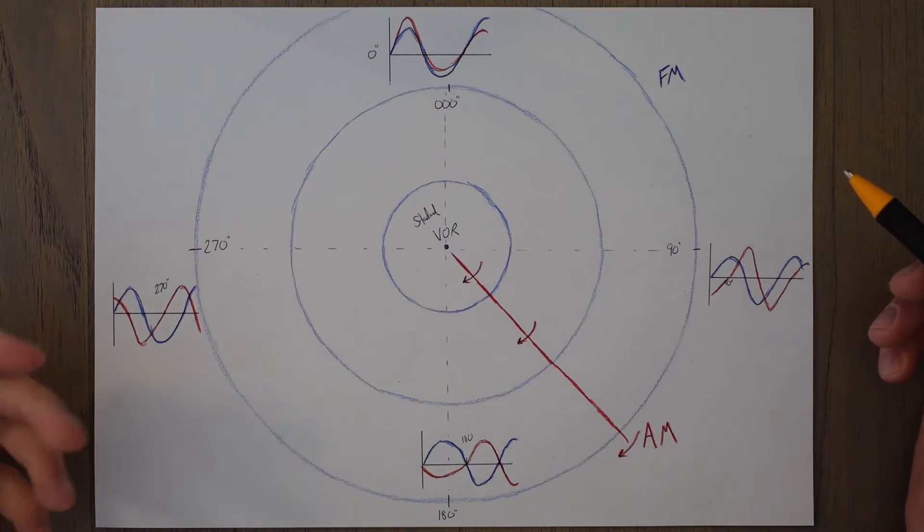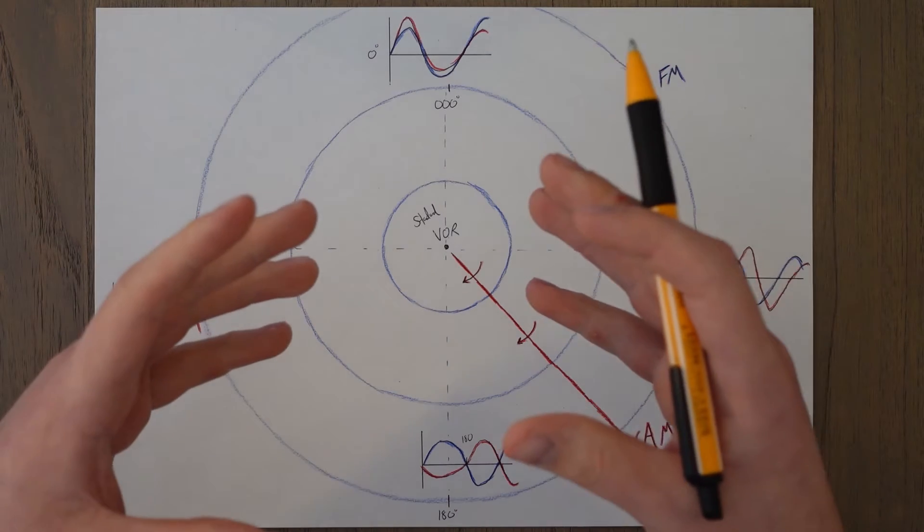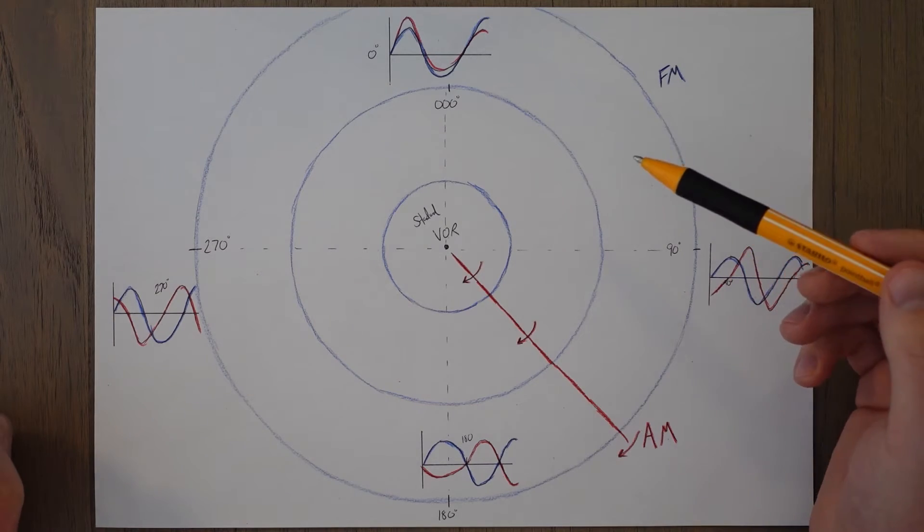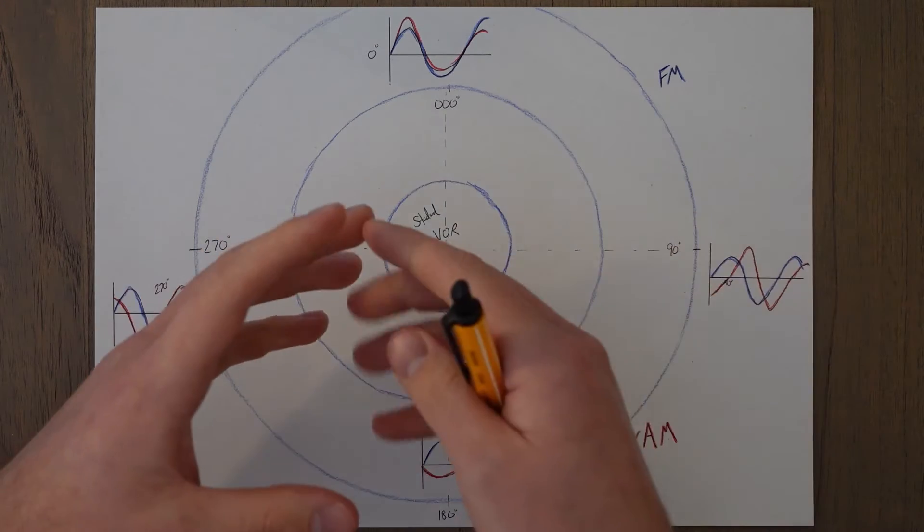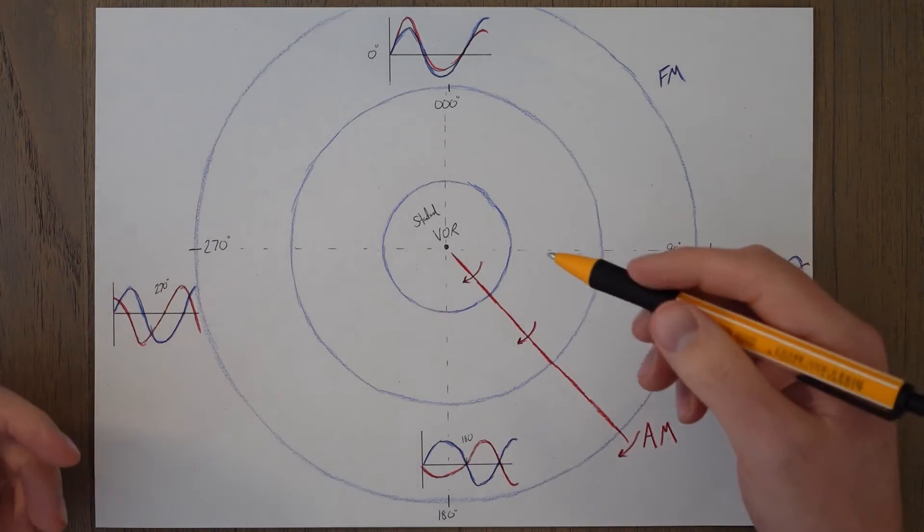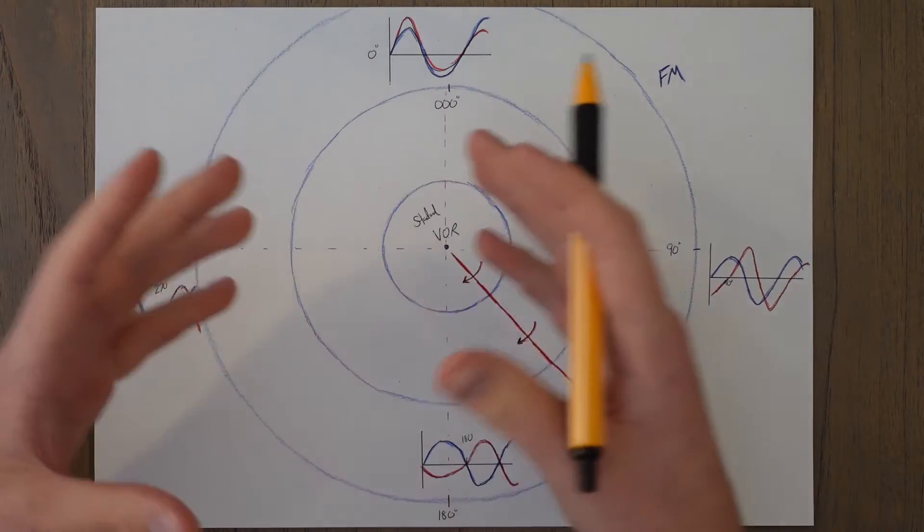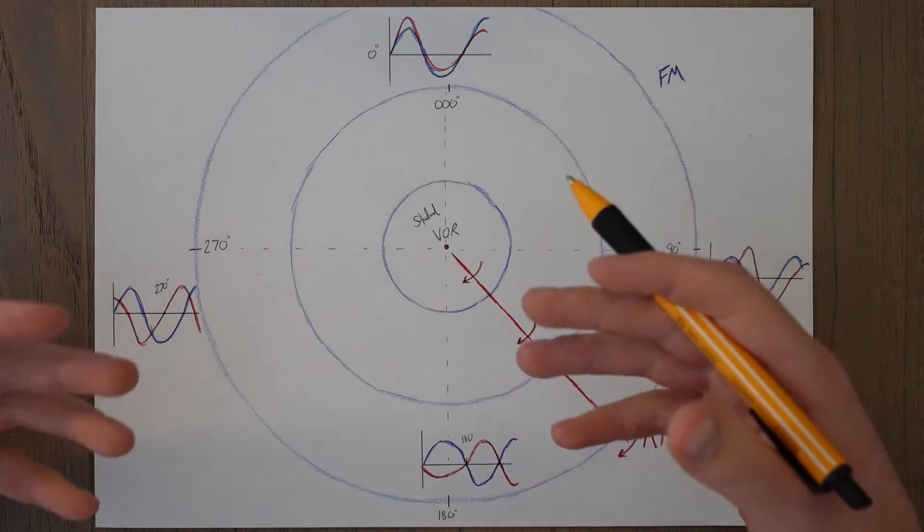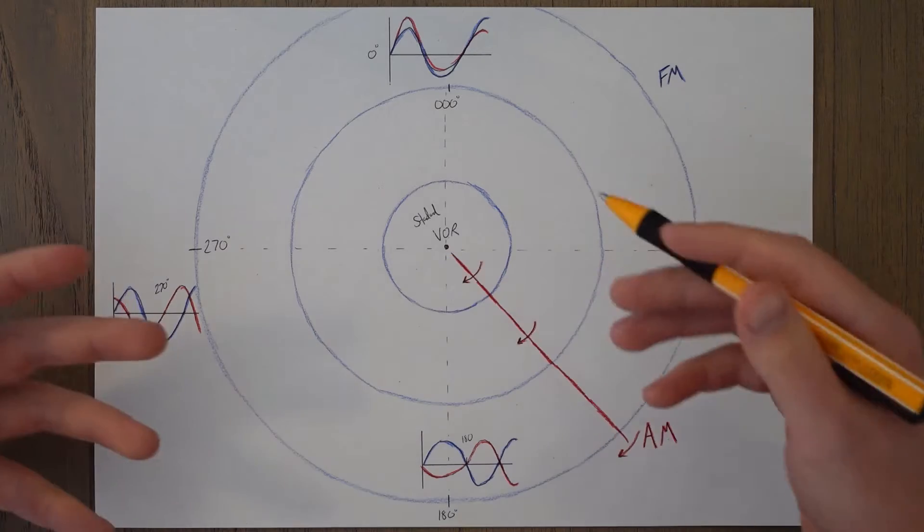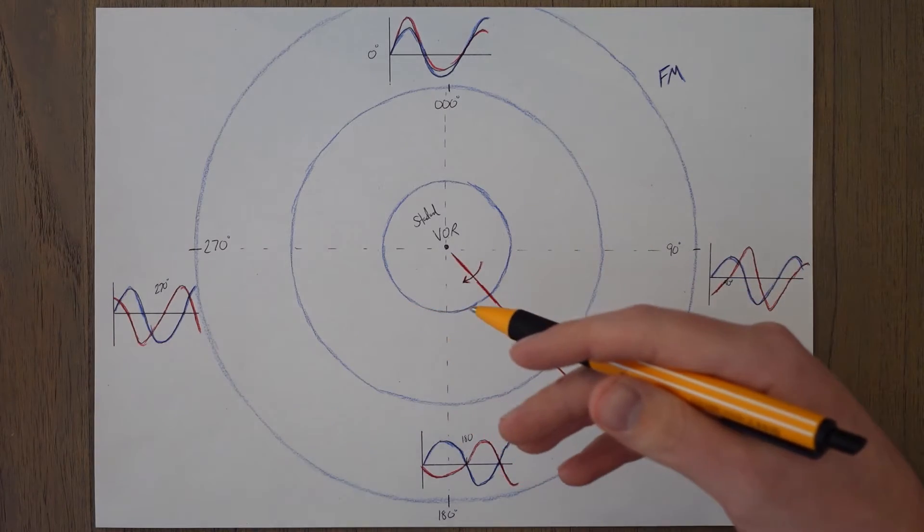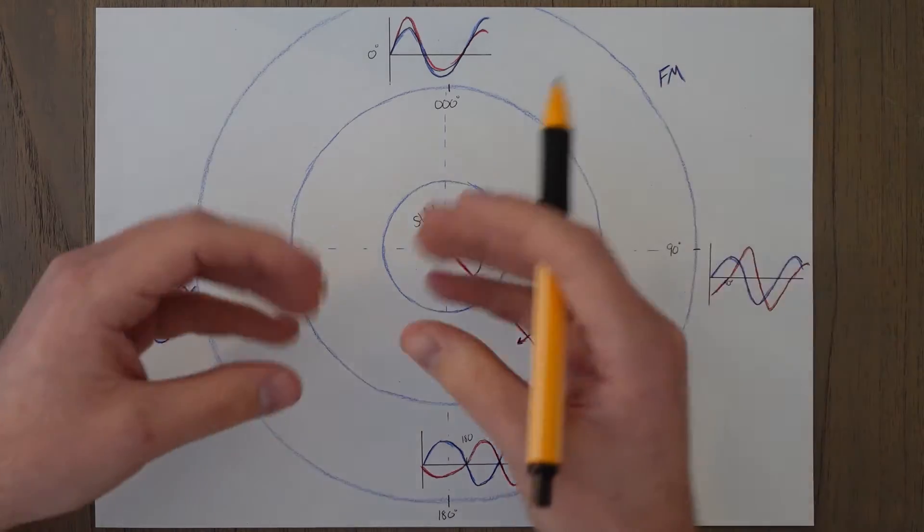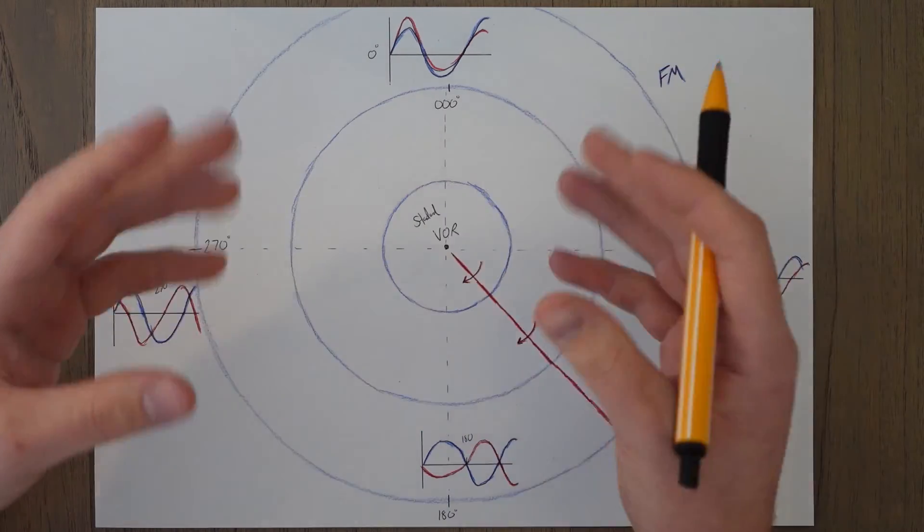A standard VOR system relies on two signals transmitted from a ground station. The first is a stationary reference signal. This signal is constantly emitted in all directions and serves as a baseline for comparison. This signal is sent out omnidirectionally at a 30 hertz frequency, so it's 30 times per second, but the actual frequency of the signal is between that 108 to 117.95 megahertz range, so it's pulsing 30 times per second like this.